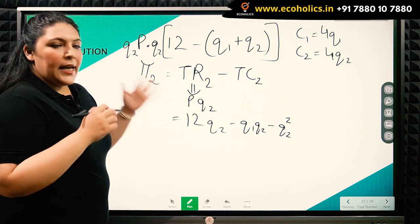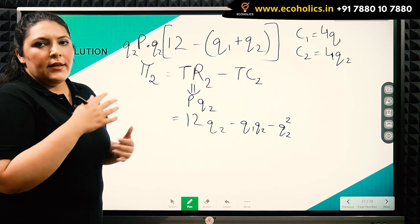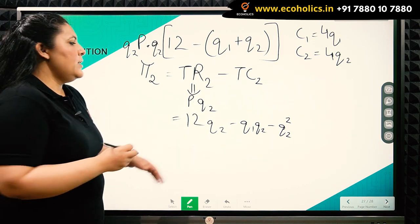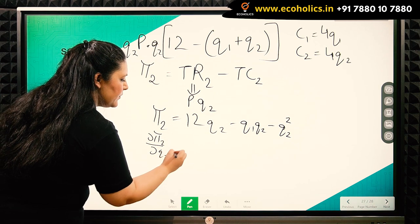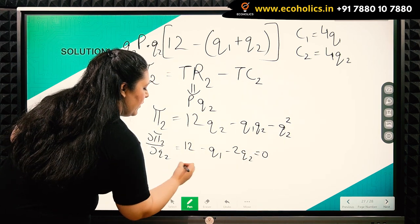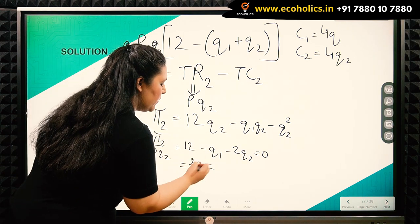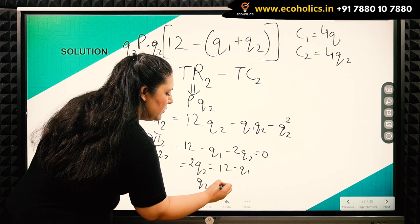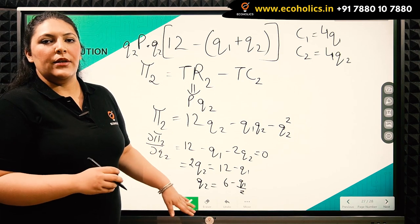The second firm will try to maximize its own profit with respect to its own quantity — this expected behavior gives us the reaction curve. Differentiating the profit function with respect to Q2 and setting equal to zero, we get 12 minus Q1 minus 2Q2 equals zero, giving Q2 equal to 6 minus Q1 over 2. This is the reaction curve of the second firm.